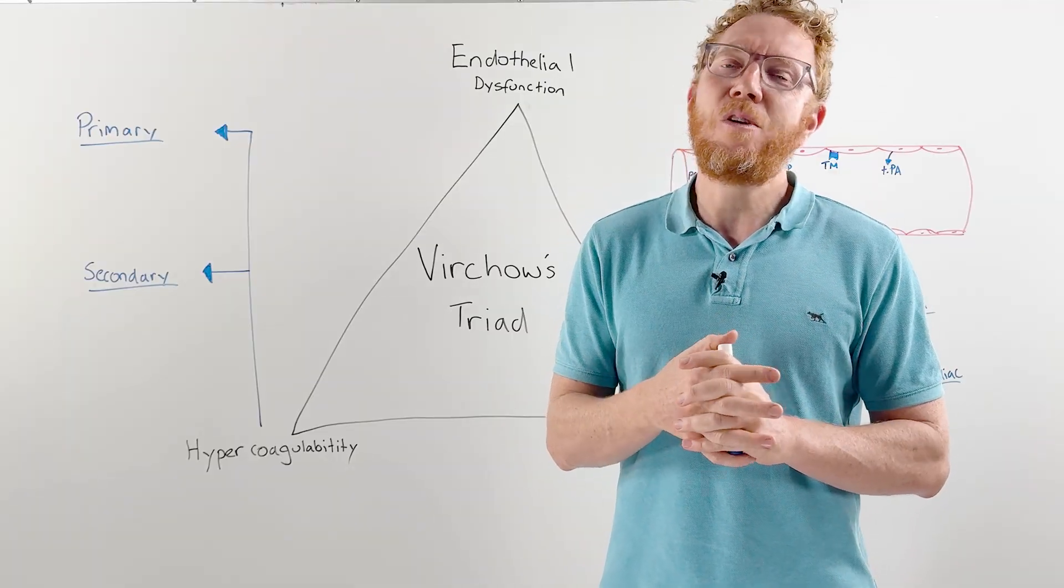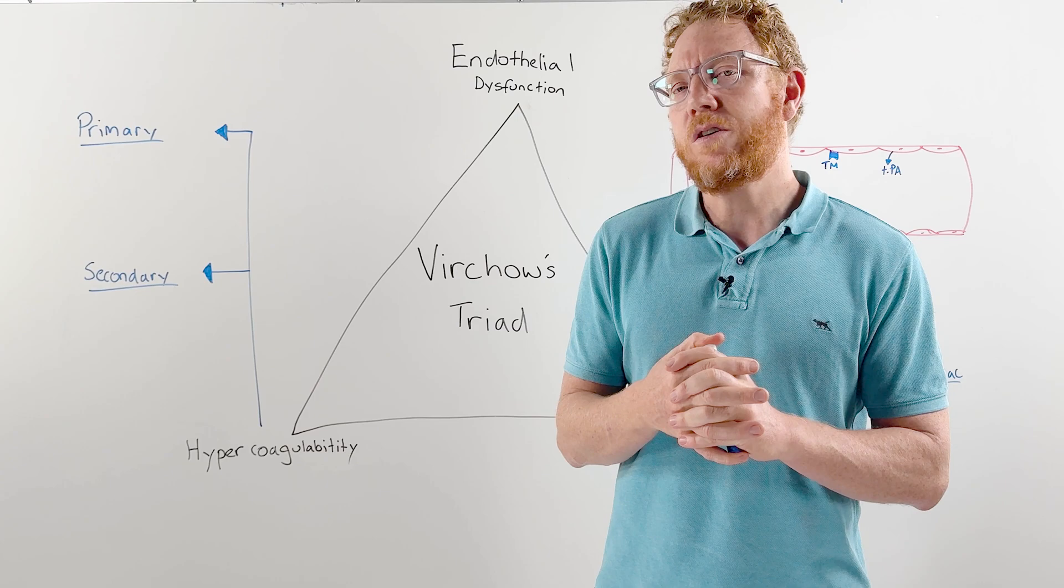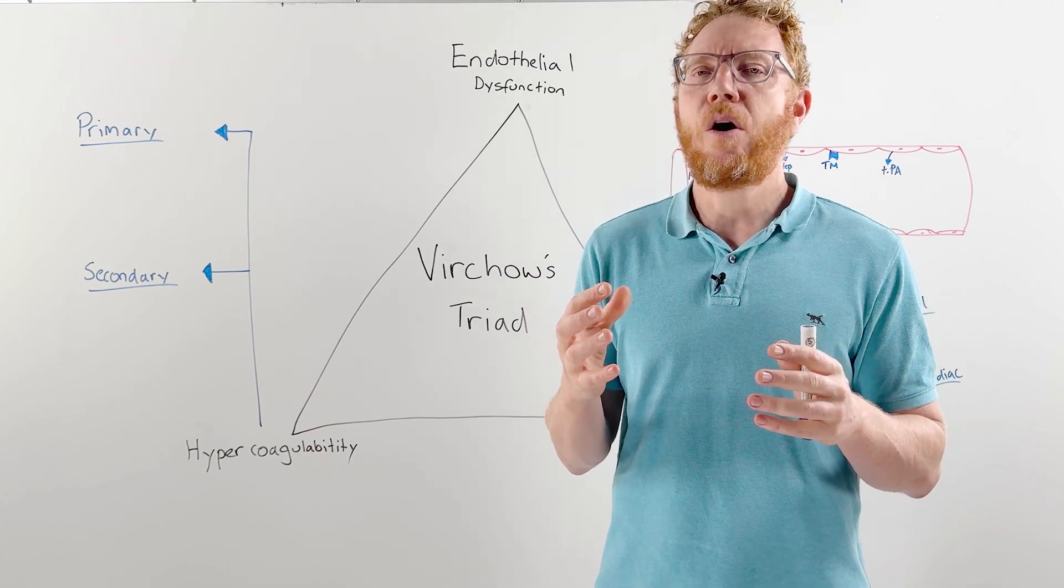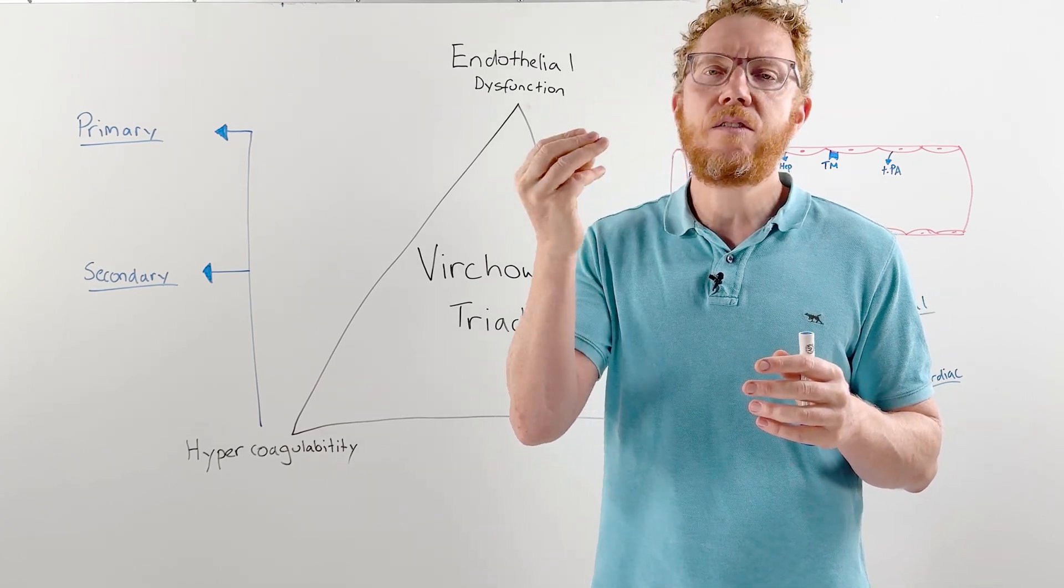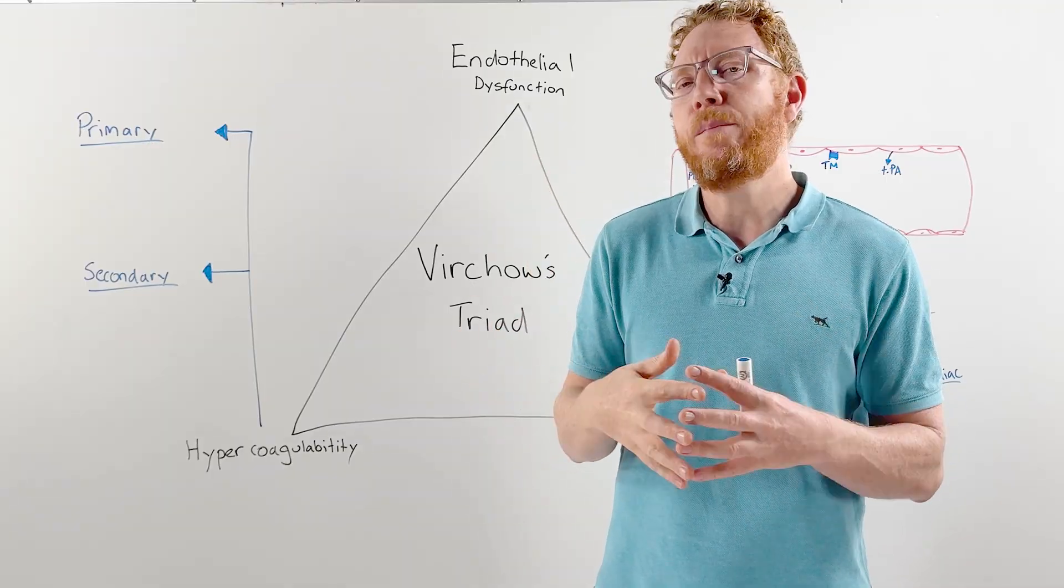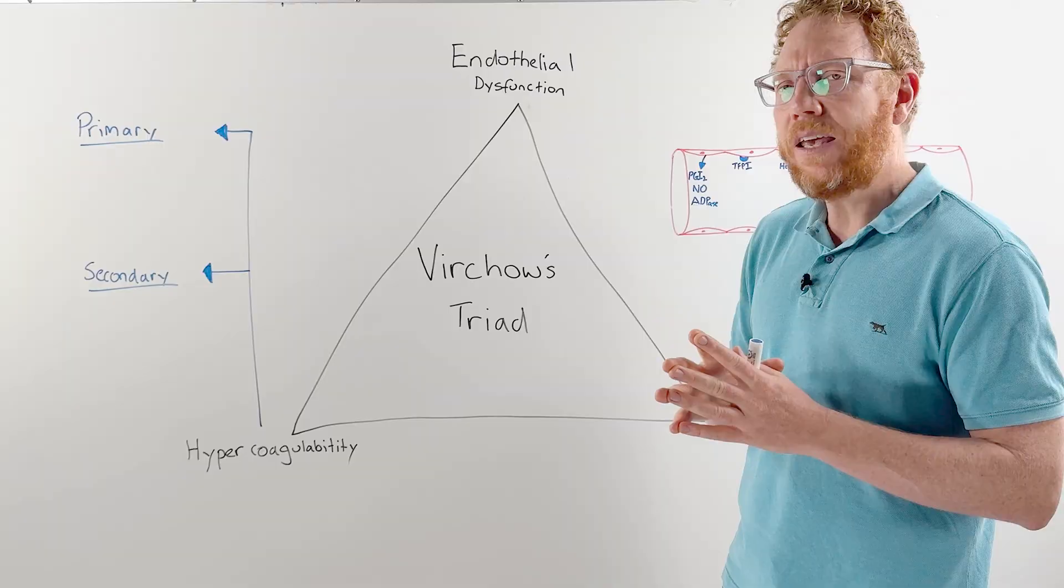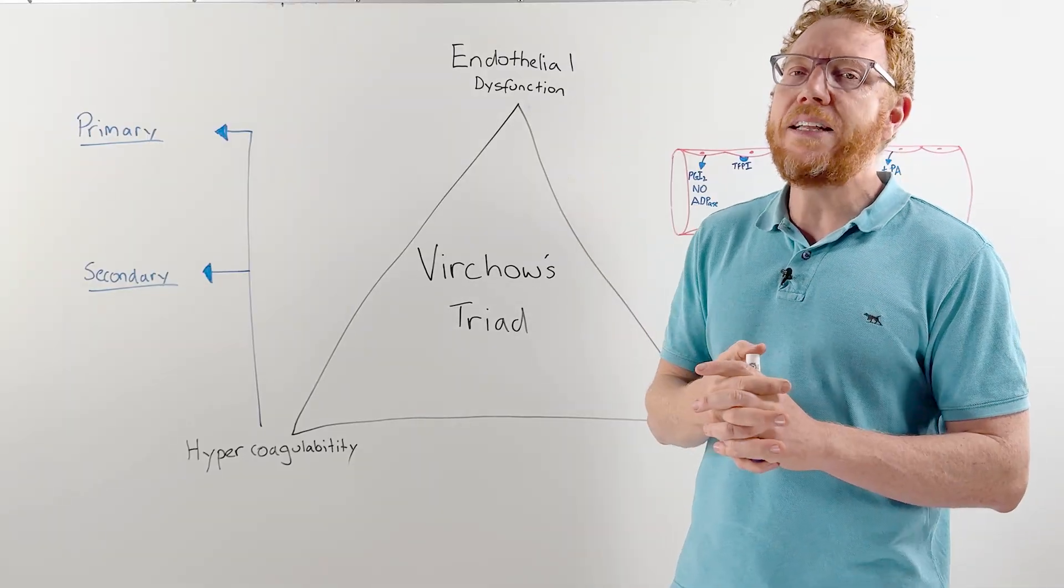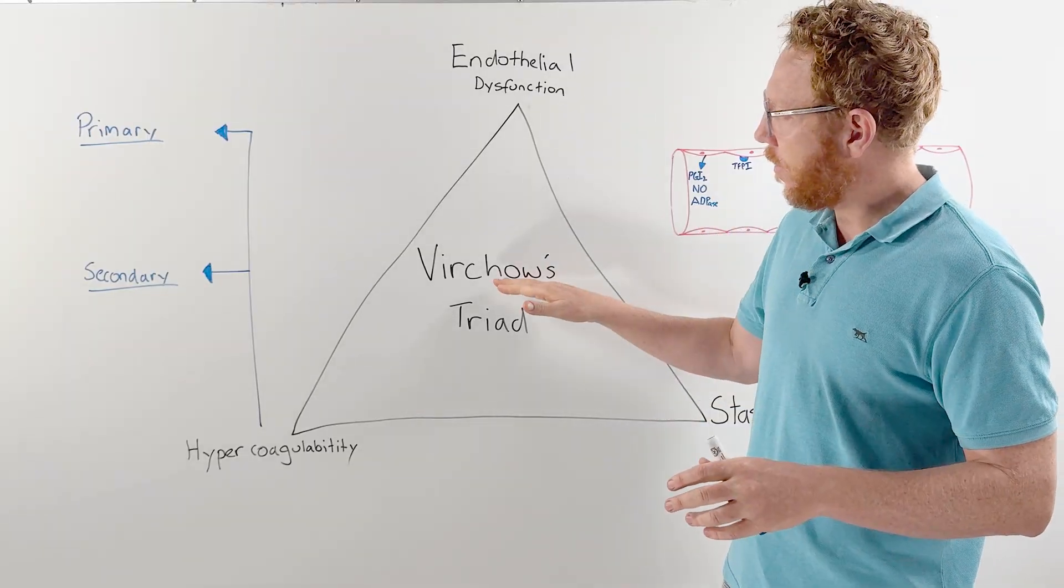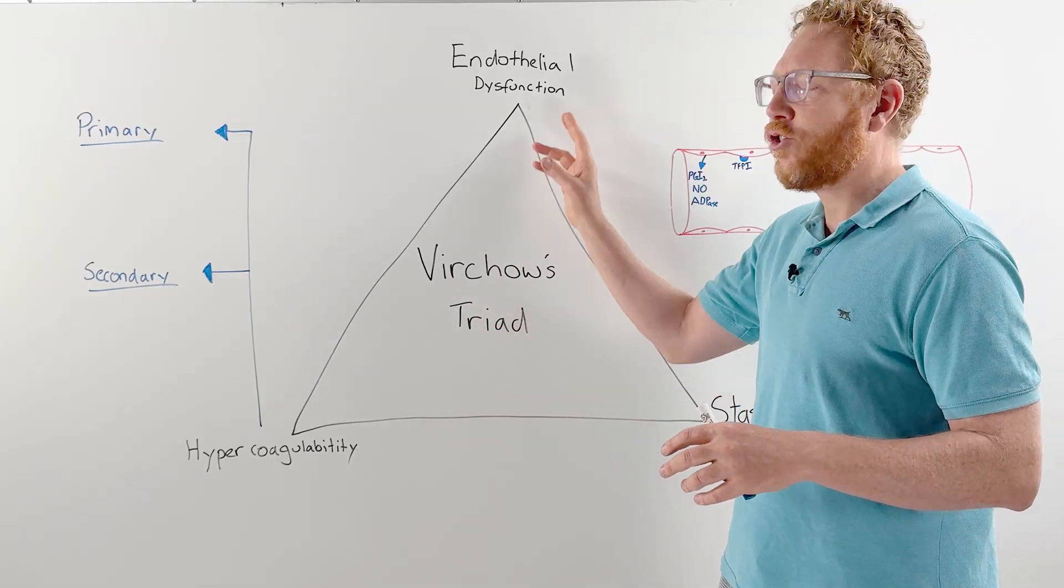It wasn't until about 200 years ago that a German physician, Dr. Virchow, proposed that there are three ingredients or main causes behind thrombotic disorders. This leads to the concept of today: Virchow's Triad, or Virchow's Triangle.